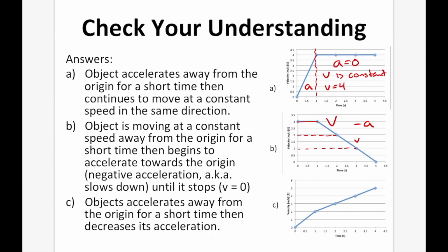For graph C: the object accelerates away from the origin, then decreases its acceleration. Between time 0 and 1, the change in velocity is 2 m/s, but between time 1 and 2, the change is only 1 m/s. The velocity is still increasing — reaching 4 m/s at time 3 — but not as quickly. So the acceleration between times 0 and 1 is greater than between times 1 and 2, though the object is still accelerating in the positive direction.